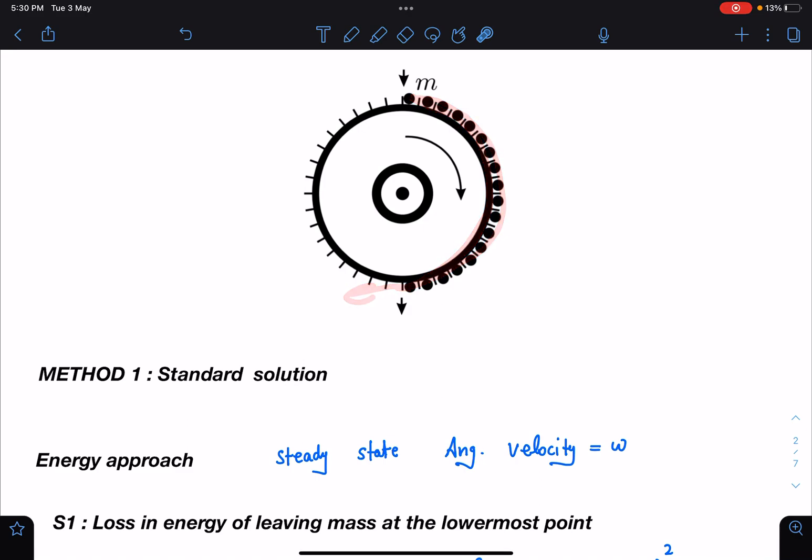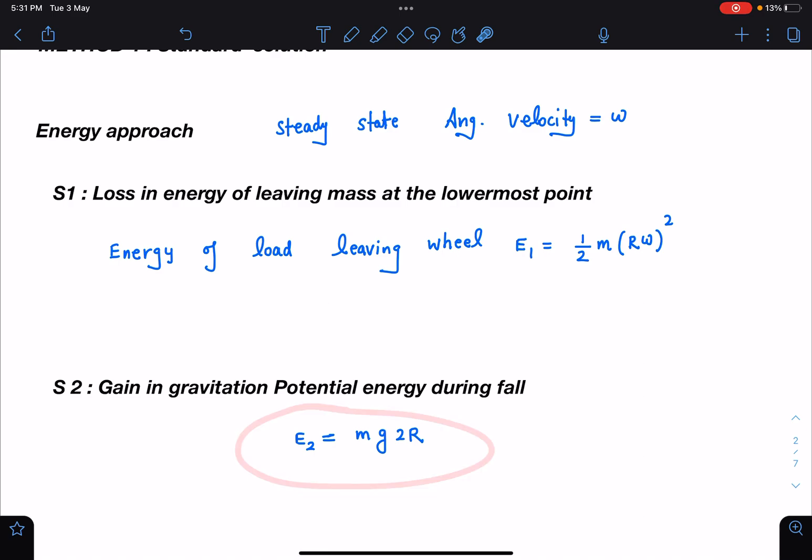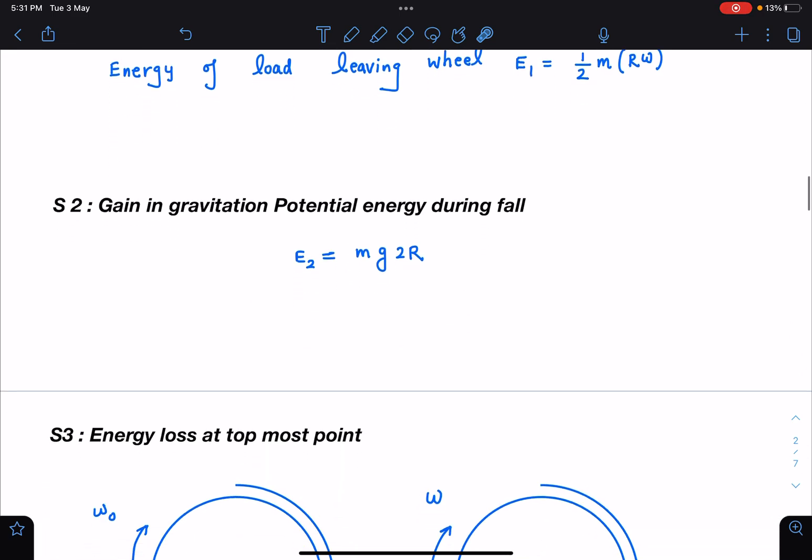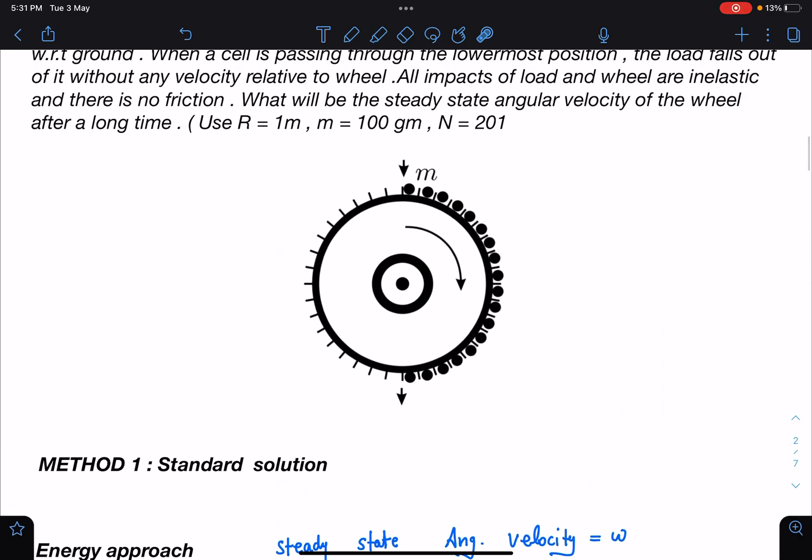How much gain in potential energy is coming? Simply I can write mg into 2R. Now the most crucial part and the difficult part of this problem is energy loss at the topmost point. This is where normally people will struggle. I will just give you the brief idea of how exactly these things are happening. You can see the moment it will fall here with zero velocity, suddenly this wheel is coming and these edges of wheel will hit the ball or hit the load. This is like inelastic collision, and due to this inelastic collision, some loss in energy will take place here. We have to account for that loss in energy also.